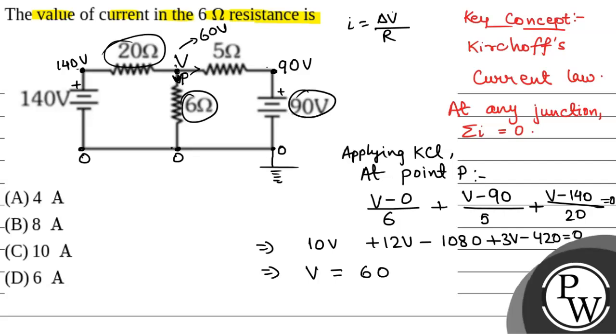Now, we have to find the current in the 6 ohm resistor. So, that will be the current in the 6 ohm resistor, I in 6 ohm, that will be equal to V minus 0 by 6.